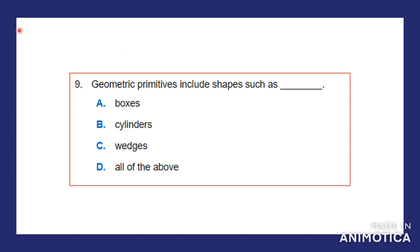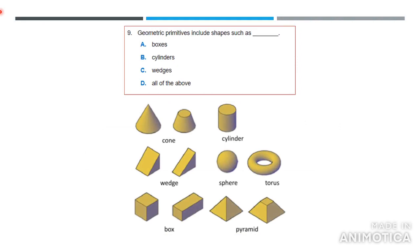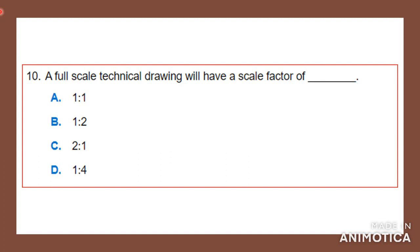Question nine: geometric primitives include shapes such as — A: boxes, B: cylinders, C: wedges, or D: all of the above? Geometric primitives are basic shapes — circles, squares, cubes. Here are some examples: cones, cylinders, wedges, spheres, torus, boxes, and pyramids. Since all options are primitive shapes, the answer is all of the above.